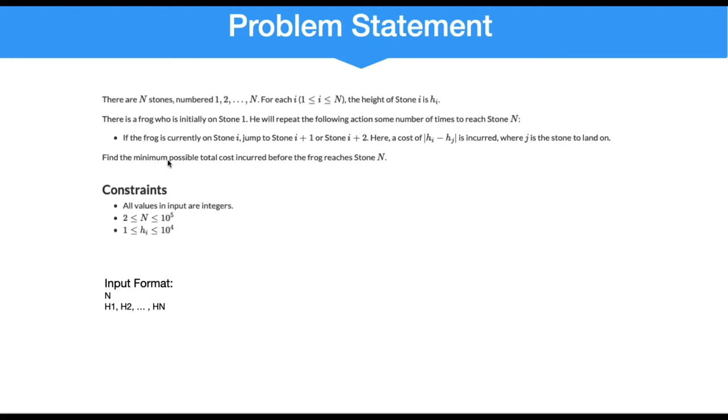This statement tells us that we need to go for a dynamic programming solution. The constraint for n is 10 to the power 5 and hi is 10 to the power 4. Input format is n and the heights h1, h2, etc. of the stones. Let us understand this through the test cases.